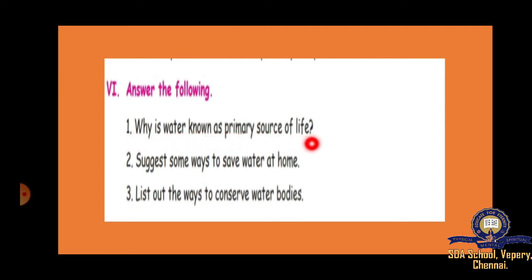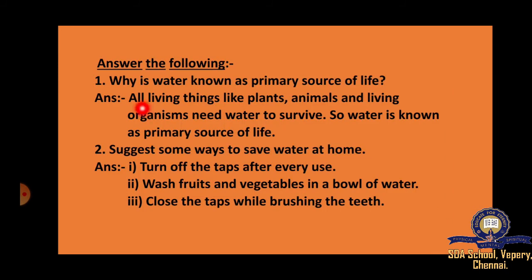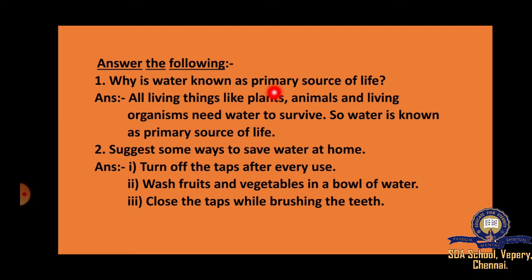Why is water known as the primary source of life? Because all living things — plants, animals, and living organisms, from small bacteria to human beings — everything on earth needs water to survive. Without water we cannot survive. That is why water is known as the primary source of life.